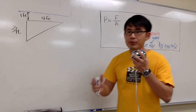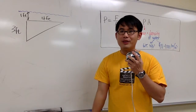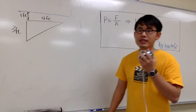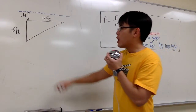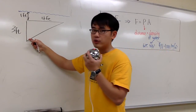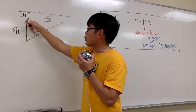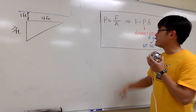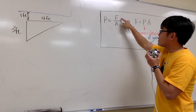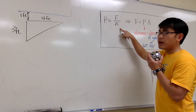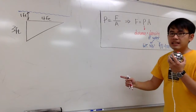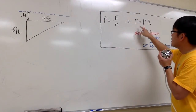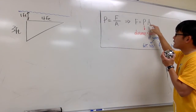Whenever we are putting anything vertically into the water, we have to use integration. The reason is because of pressure — when you are down here, the pressure will be bigger compared to the pressure up here. The connection between pressure and force is: pressure equals force divided by area. Since this question is asking us to find the hydrostatic force, we can rewrite this as force equals pressure times area.